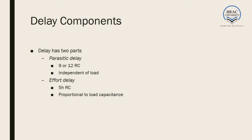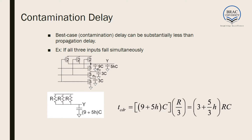There are two parts of the delay. First, the parasitic delay — 9RC for rising or 12RC for falling — which is independent of the load. Whether or not a load is connected, this parasitic delay will be present. Second, the effort delay — 5HRC — which only appears when a load is connected. The delay can vary significantly between worst and best case scenarios.